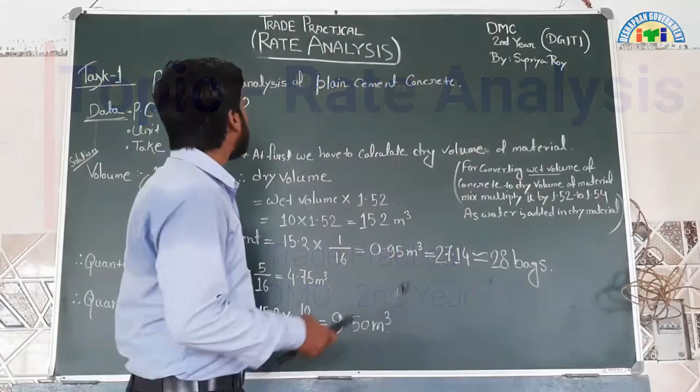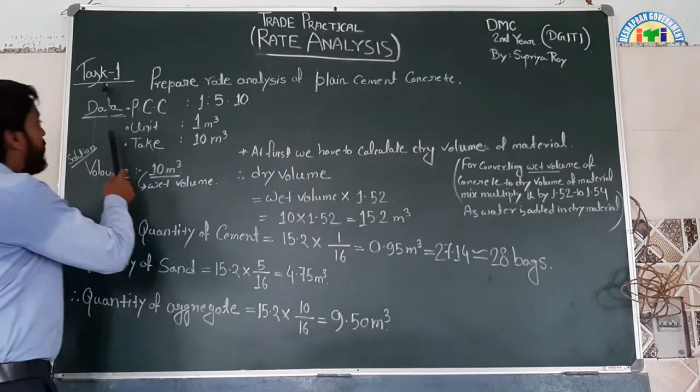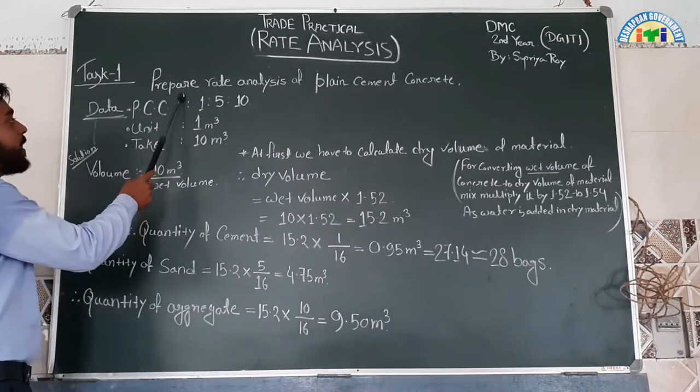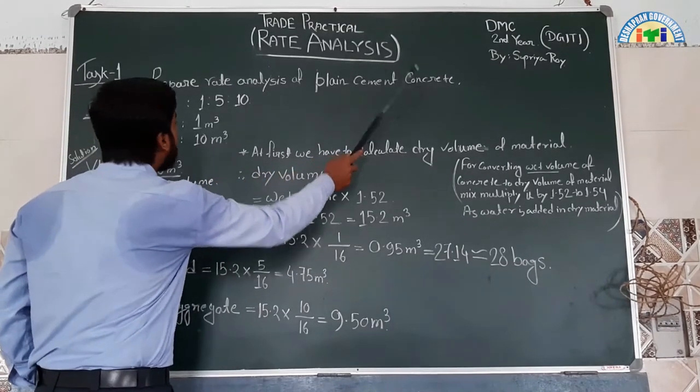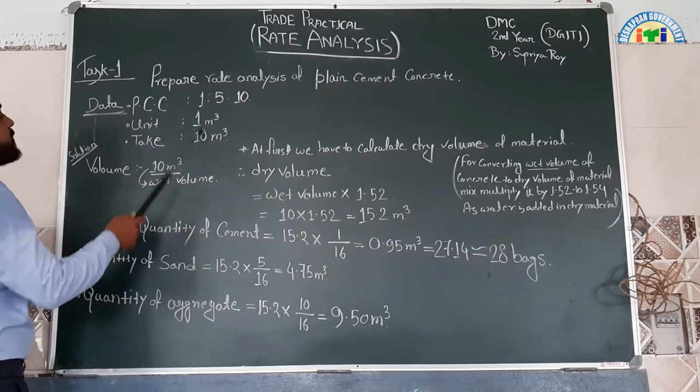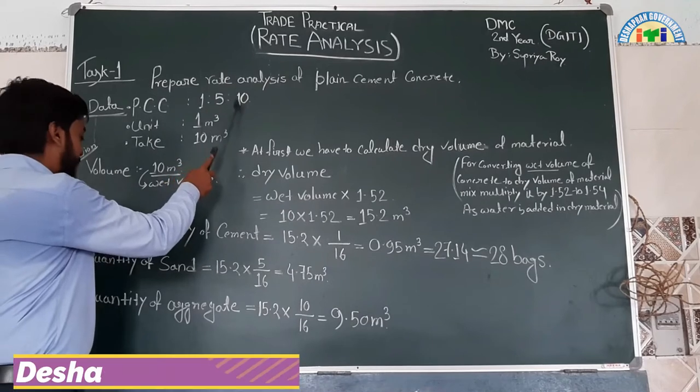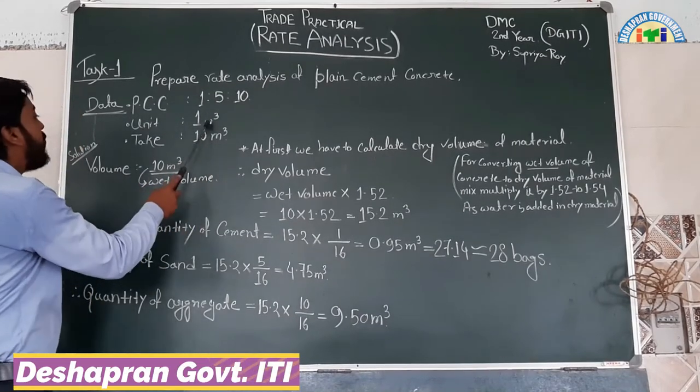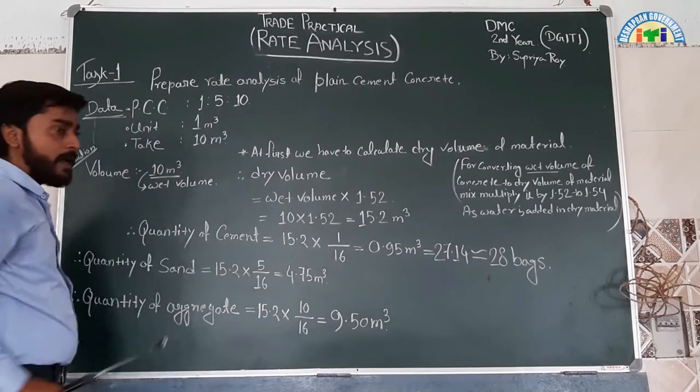I am going to show you a rate analysis. The problem is to prepare a rate analysis of plain cement concrete with a mix ratio of 1:5:10, which is 1 part cement, 5 parts sand, and 10 parts aggregate for 10 cubic meter volume.